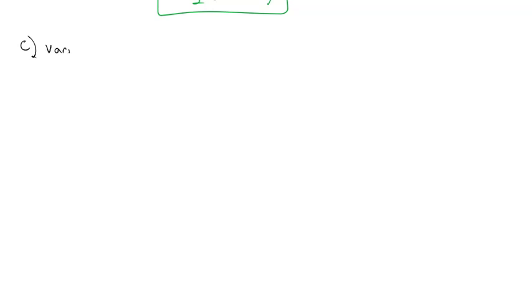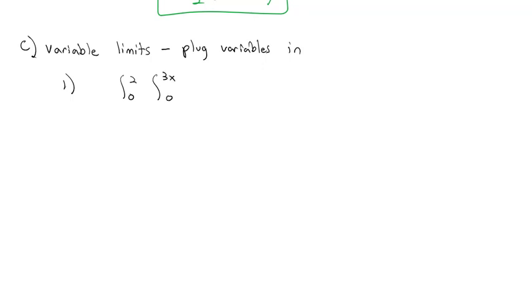Integrating this way allows us to use not just constant limits like 0 to 1 or 3 to 4, but also variable limits, where instead of numbers we plug in variables when evaluating the antiderivative. For example, the integral from 0 to 2 of the integral from 0 to 3x of xy² dy dx — there's a 3x for the upper limit on the first integral.